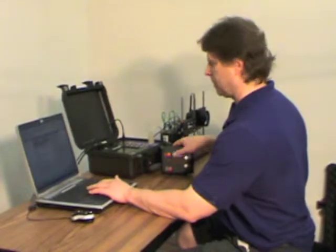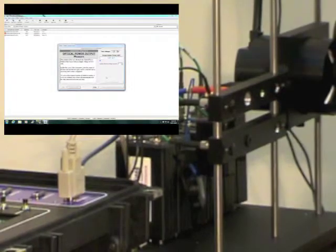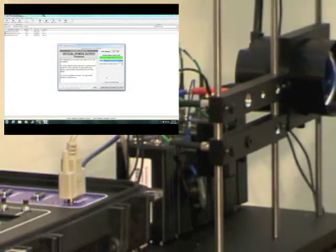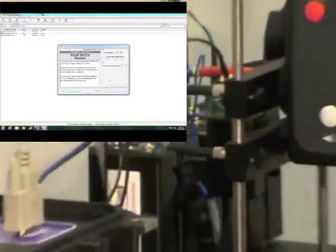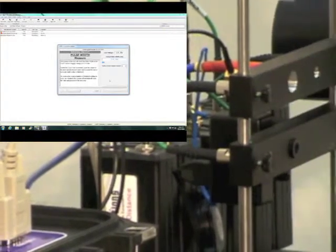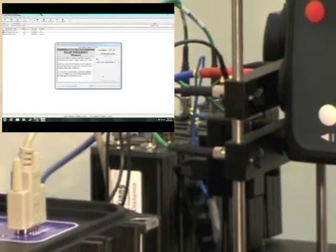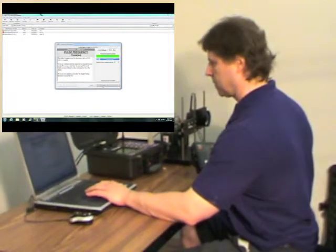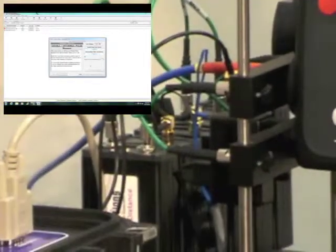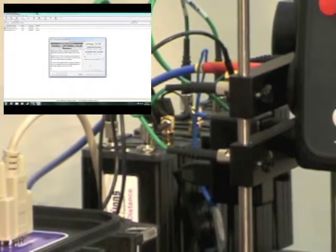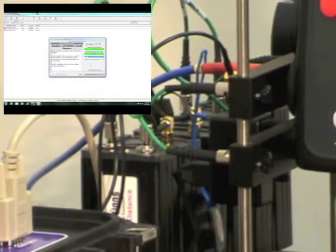Now we are ready to begin the automated process. The first test we will run is the optical power test. You will note on the screen when the green field fills out that the test is satisfactorily completed. The second test is the pulse width. The third test is the pulse rep rate. The fourth test is the double or intermittent pulse test. Again, the green field.